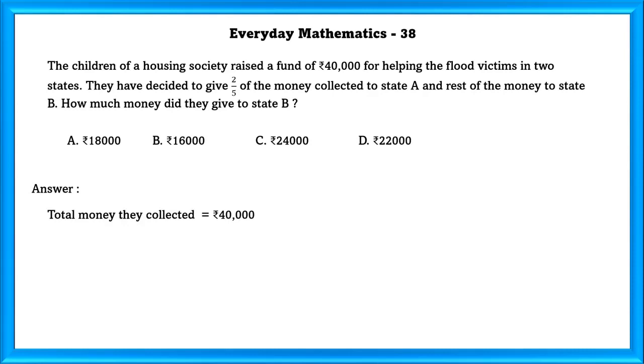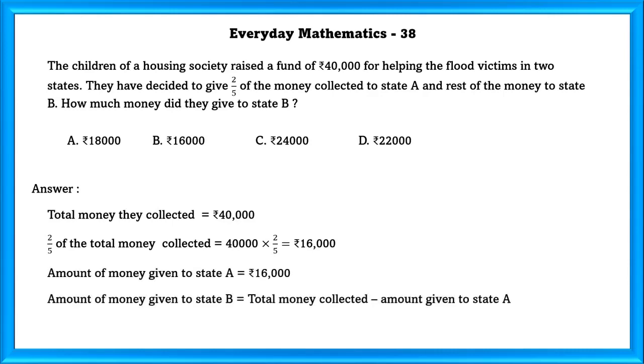Total money they collected is equal to 40,000 rupees. 2/5 of the total money collected is equal to 16,000. That is state A. Amount of money given to state B is equal to total money collected minus amount of rupees given to state A. State B is equal to 24,000 rupees.